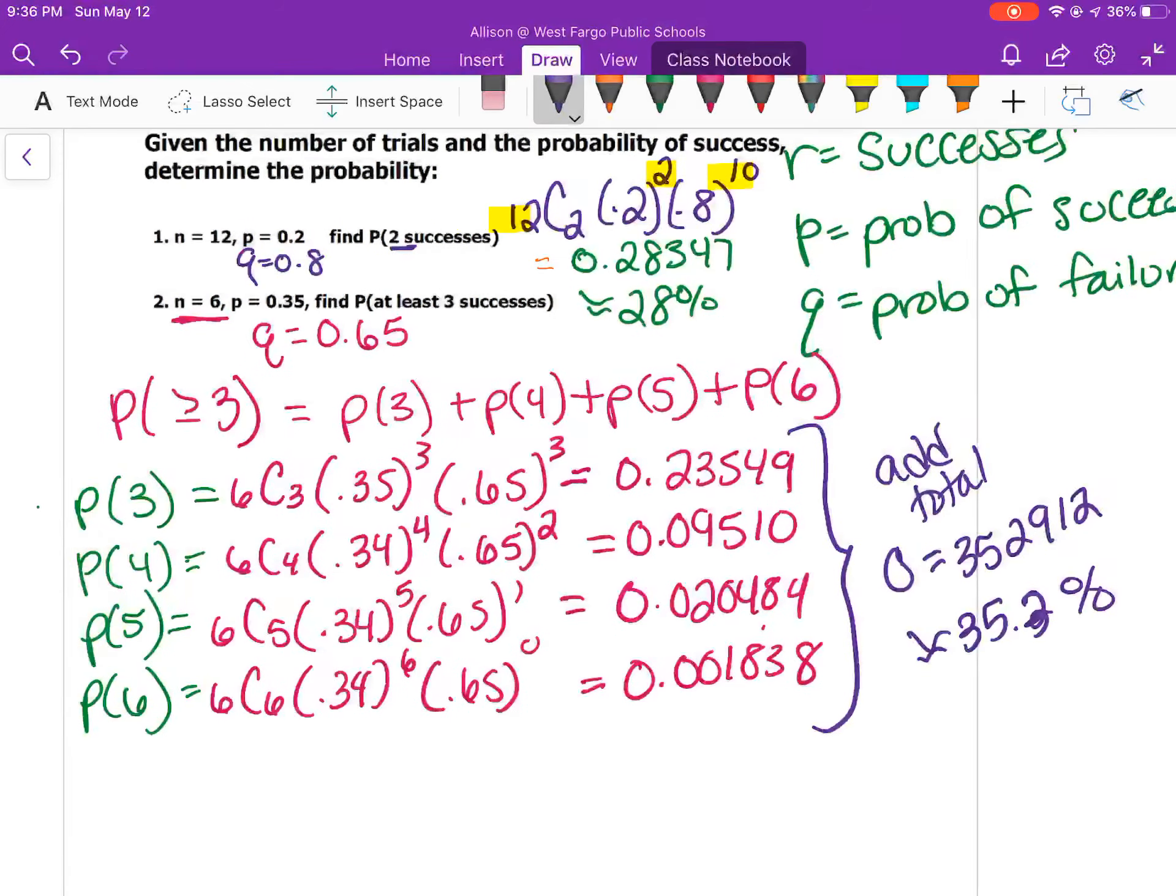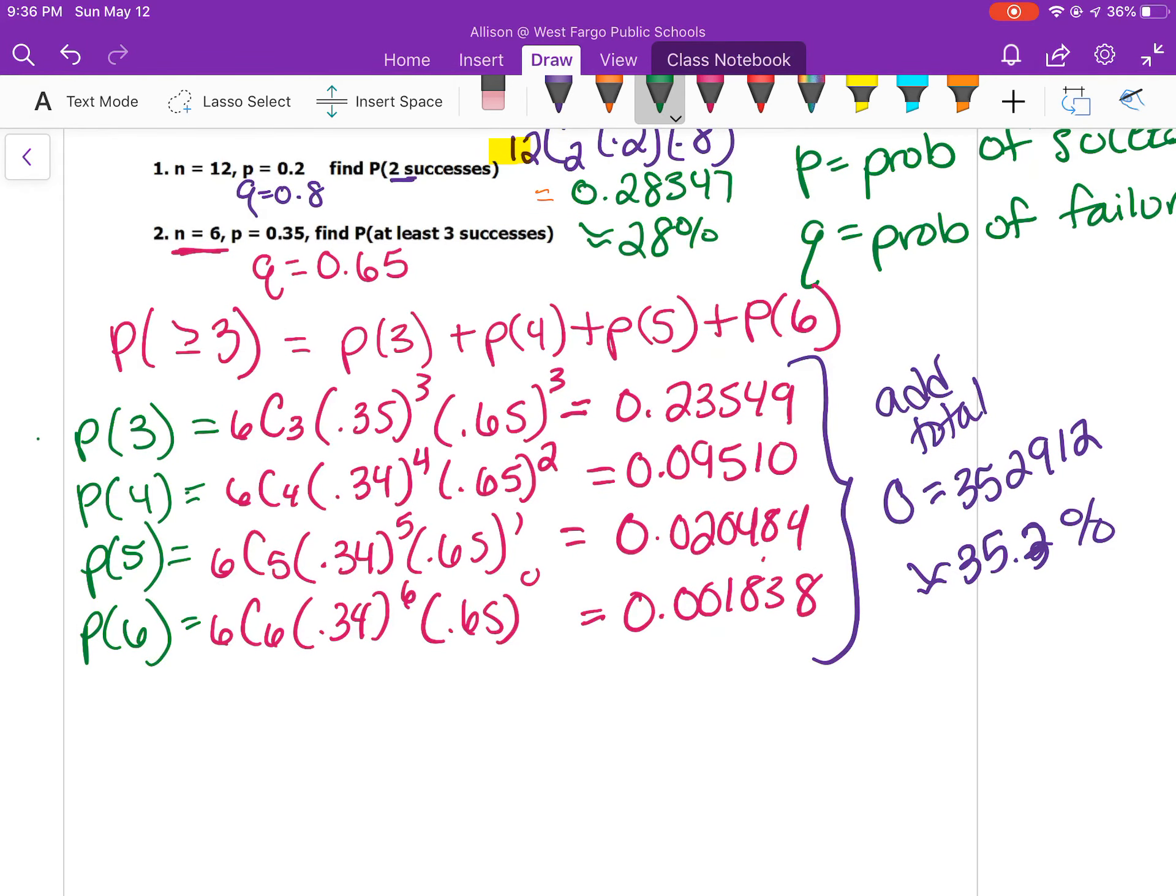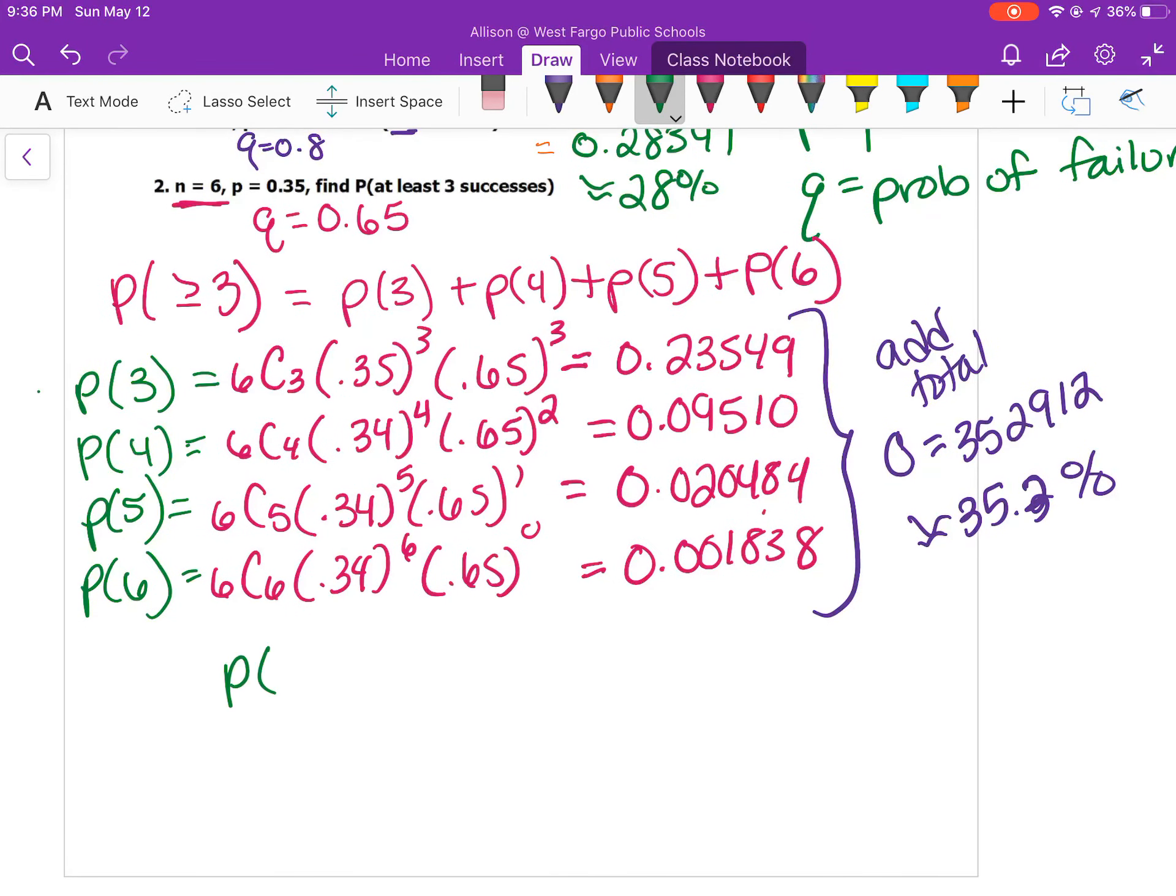There is another way to do this. The opposite of P greater than or equal to 3 would be P less than 3. We could do 1 minus the probability that you get something less than 3. Which would be 1 minus the probability of 0 plus the probability of 1 plus the probability of 2. That one would have had 1 less to do, but you would have still had to take that decimal and subtract it from 1. So essentially the same amount of work.